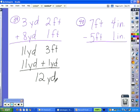On number 40, we're subtracting. 4 inches minus 1 inch would be 3 inches. 7 feet minus 5 feet would give us 2 feet. In subtraction, there are times that you might have to end up borrowing.